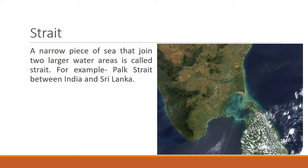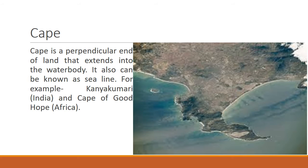After gulf, let's study about strait. A narrow piece of sea that joins two larger water areas is called a strait. The region between India and Sri Lanka, shown in a different shade on the map, is a strait. Its name is Palk Strait, and it is the example of a strait.